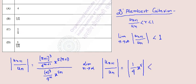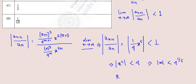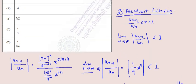This will be less than 1 as per the convergence condition. From here we can find that x^5 is less than 4, and so the modulus of x is less than the fifth root of 4. This is the radius of convergence. Our answer will be option B.